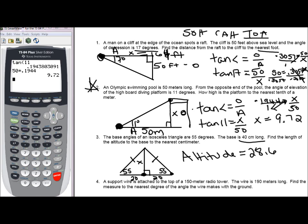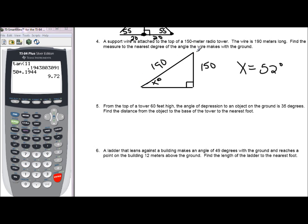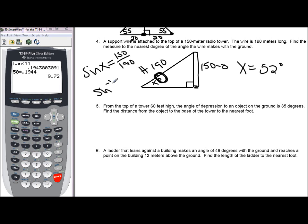For number four, the wire is the hypotenuse and the tower height of 150 meters is the opposite side, with the hypotenuse being 190 meters. Since we have the opposite and hypotenuse, we use the sine function: sine of x equals 150 over 190. To find the angle, we use sine inverse — type second sine of 150 divided by 190 — and we get 52 degrees to the nearest degree.